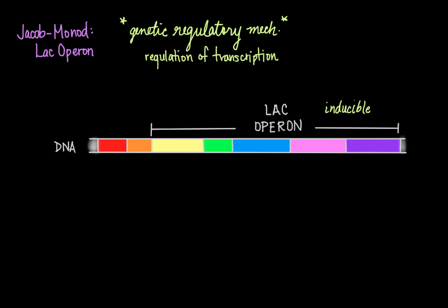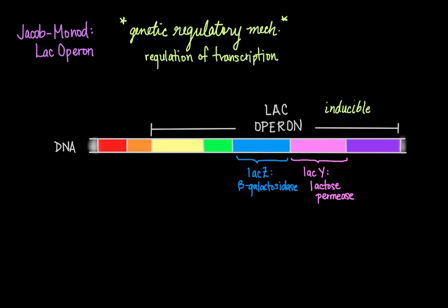It is the presence of lactose that actually induces the transcription of the genes in the LAC operon. There are three coordinately regulated genes contained in the LAC operon. The LAC-Z gene codes for an enzyme called beta-galactosidase, a cytoplasmic enzyme that cleaves lactose into glucose and galactose. The LAC-Y gene codes for lactose permease, a cytoplasmic membrane protein that transports lactose into the cell.